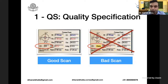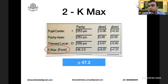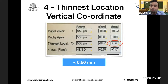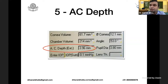The first thing is the QS or quality specification — it should be 'OK.' A red mark means it's a bad scan and not reliable. Kmax should generally be less than 47.2. The thinnest location should be more than 470 microns for a normal cornea. The Y-axis deviation should be less than 0.50 mm, since keratoconus results in deviation in the Y-axis. The AC depth — specifically the internal AC depth — should be more than 2.8 mm, particularly when planning a phakic IOL. The Q value should be between 0 and minus 1.